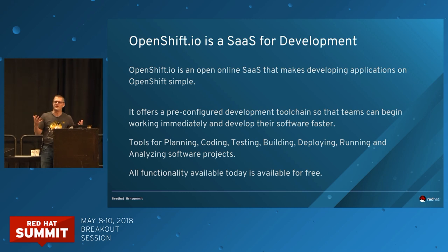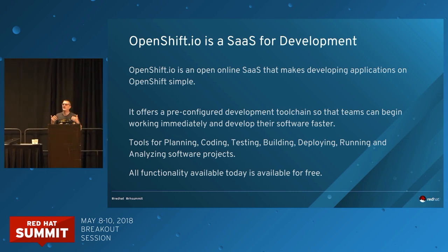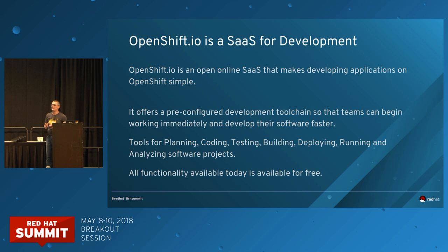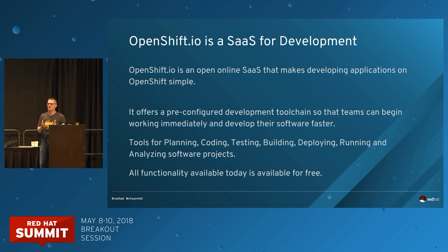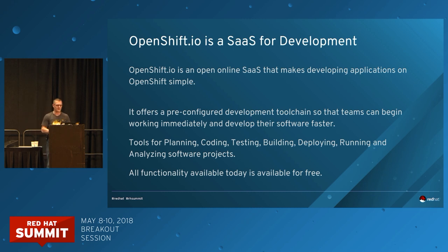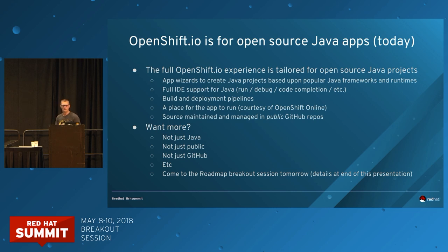For those of you who haven't used it: what is OpenShift.io all about? It's about making applications that you can deploy on OpenShift. As you saw in the keynote this morning, there's tremendous power in making these applications for OpenShift because they become instantly portable across hybrid cloud. And everything I'm going to show you today is available for free if you go sign up for OpenShift.io.